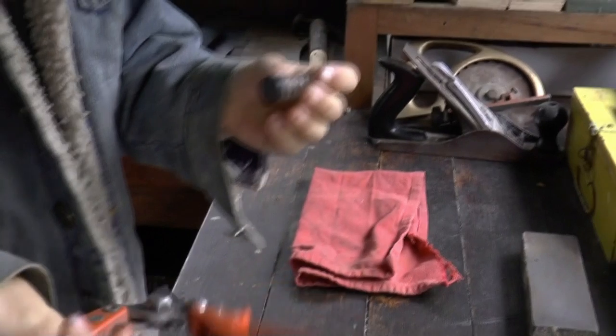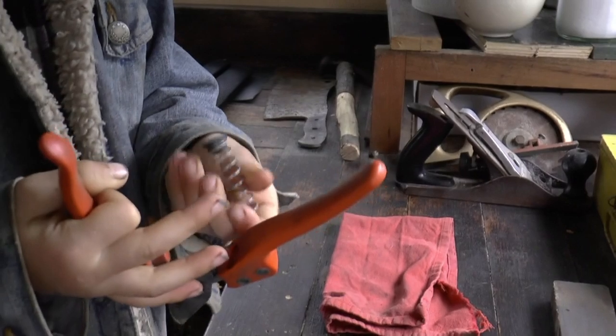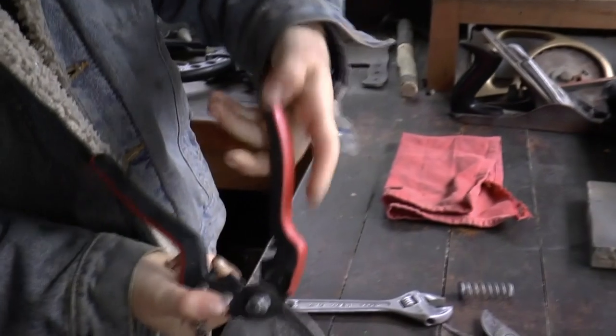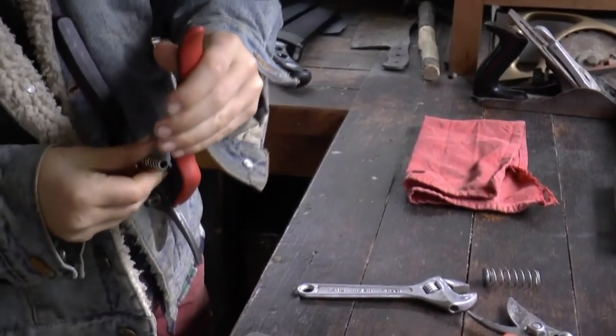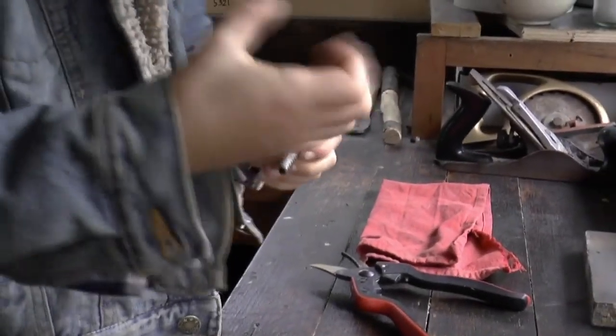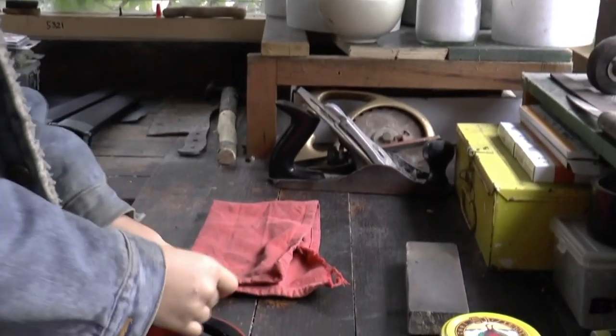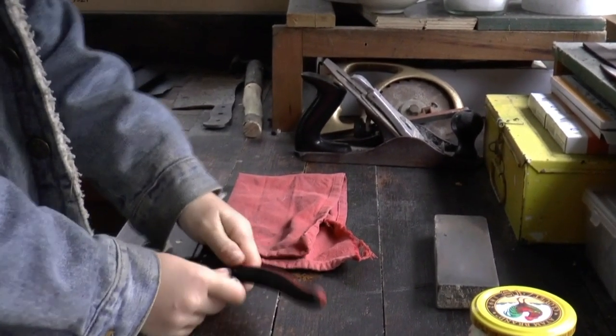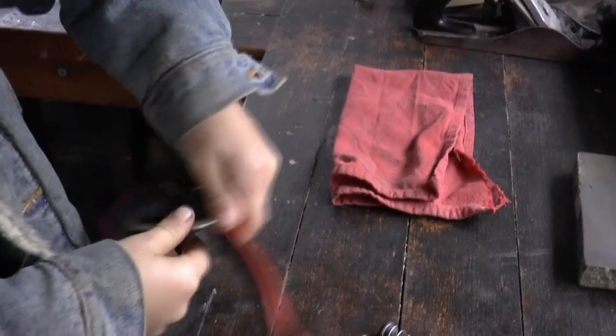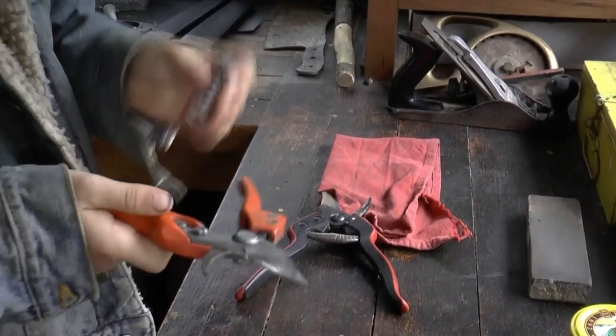So those little black bits there, that black bit there can go in there, but these are more common ones here. When you're putting it back together, how do you know? This is a spring, so when you're cutting, it's much more springy. That goes in there usually, but with these ones these are a bit different, and that just goes in there.